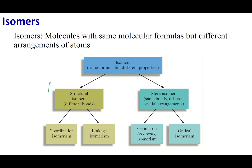One type of isomer is the so-called structural isomers. In structural isomers, the connectivity is different — there are different bonds in these types of isomers. In this chapter we're going to focus on coordination isomers and linkage isomers. We'll revisit this topic when we talk about organic chemistry in chapter 21.